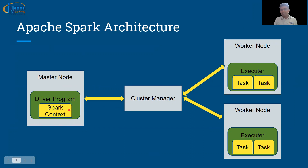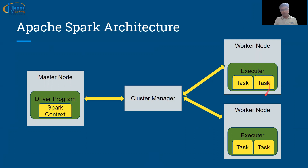Once the RDD is created, we move to the worker node. Worker nodes have executors — processes that actually execute the tasks. An executor can execute one or more tasks. For example, one job with 10 tasks will be divided across multiple executors spread across worker nodes. After executing the tasks, the output is sent back to the Spark context. This is how the master and slave components interact with each other.